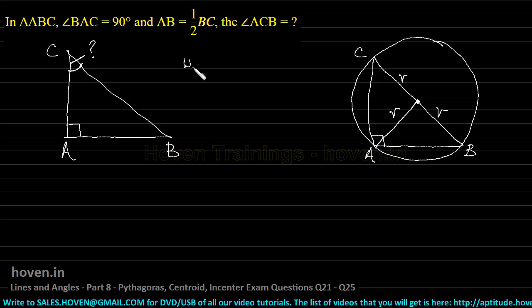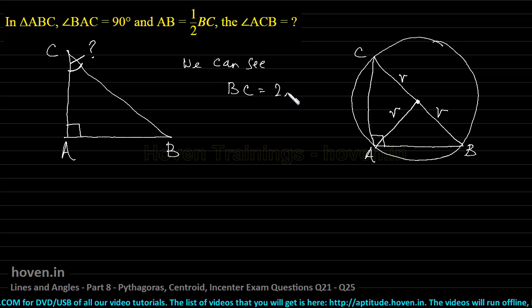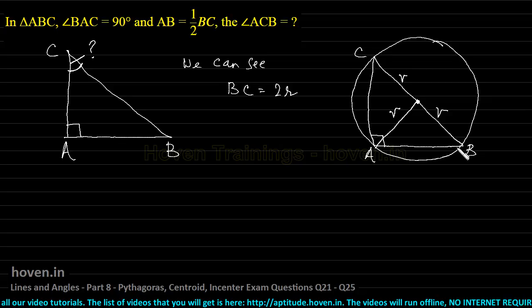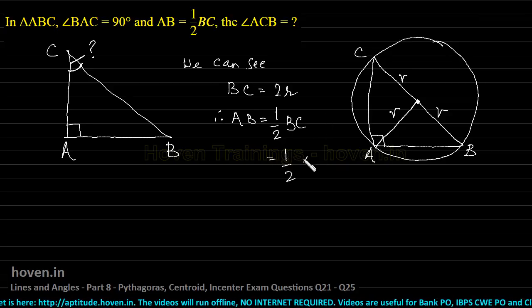We can see that BC is equal to 2R. This is R and this is R. The diameter is 2R. Therefore, AB is equal to half of BC is equal to half of 2R,